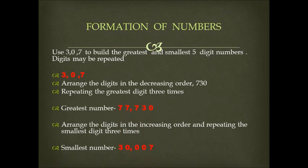Another example: use 3, 0, and 7 to build the greatest and smallest five-digit numbers. Digits may be repeated. Arranging the digits in the decreasing order, we get 7, 3, 0. Repeating the greatest digit three times, the greatest number formed would be 77,730. Arranging the digits in the increasing order and repeating the smallest digit three times, the smallest number formed would be 30,007.